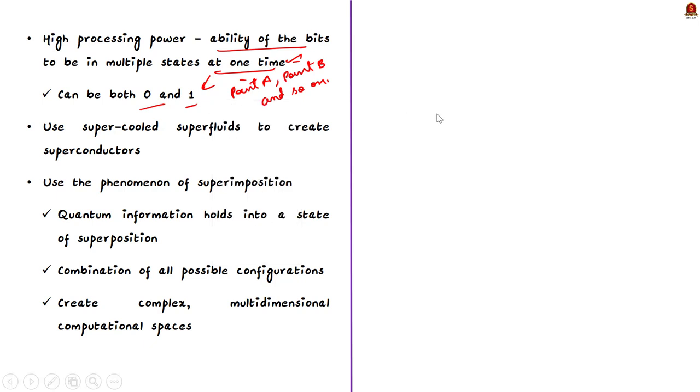Quantum computers are elegant machines, smaller and requiring less energy than the supercomputers. The processors use super-cooled superfluids to create superconductors. A qubit itself isn't very useful, but it can perform an important trick. After placing the quantum information, it holds into a state of superposition. This represents a combination of all possible configurations of the qubit. Group of qubits in superposition can create complex multidimensional computational spaces. And complex problems can be represented in new ways in these spaces.